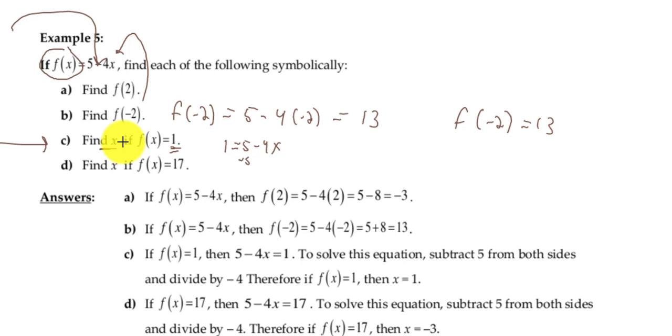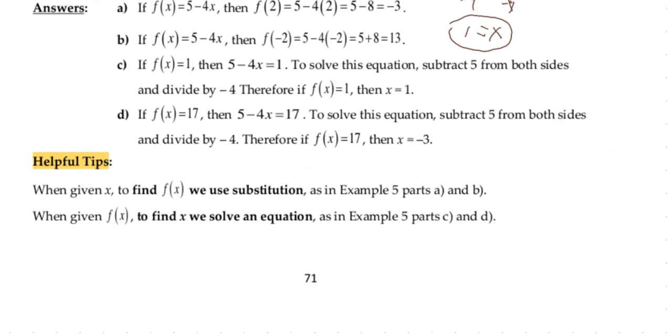So if I subtract 5 from both sides, I get negative 4 equals negative 4x. Divide both sides by negative 4 to get 1 equals x. And that would be my final answer. These are good problems. Definitely you want to practice a few of these.